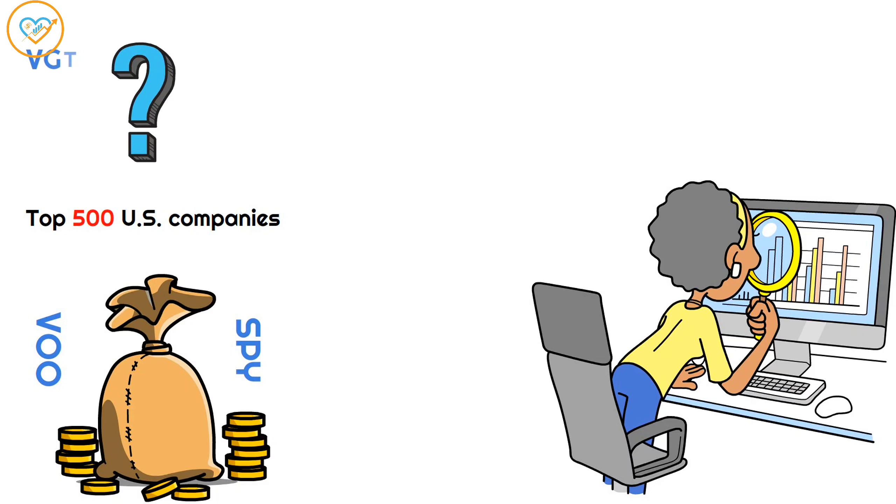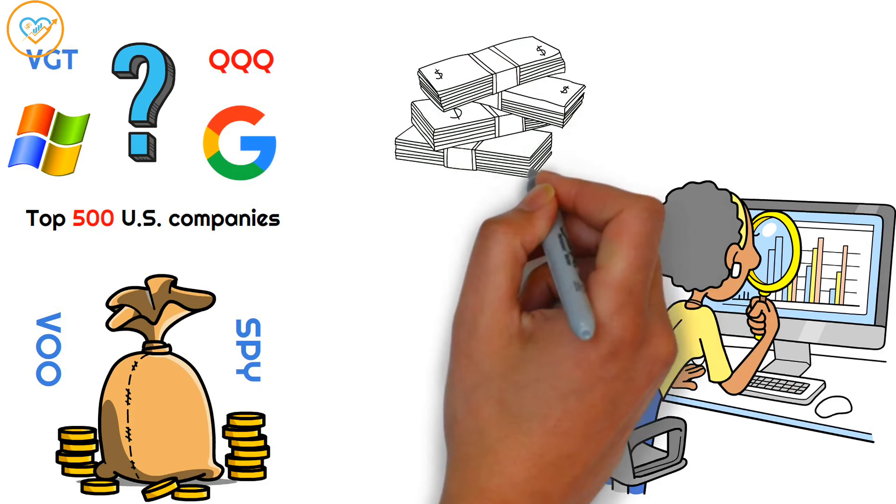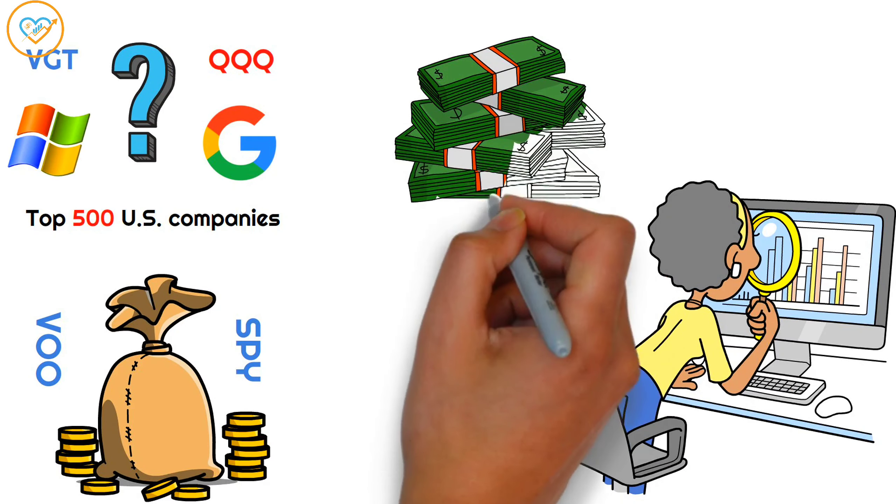Interested in tech? Look into funds like VGT or QQQ, offering exposure to tech giants like Microsoft and Google. And if you're after steady income, check out dividend funds like VYM or SDY.